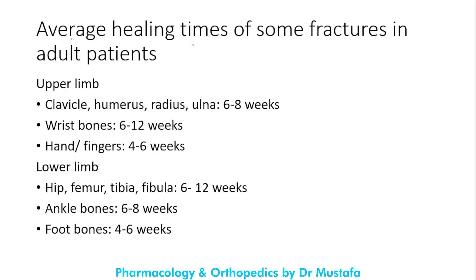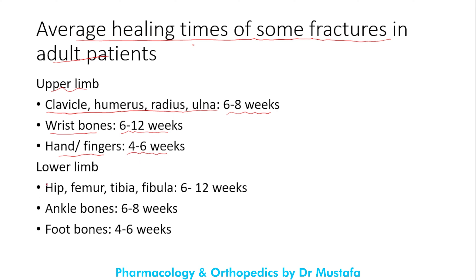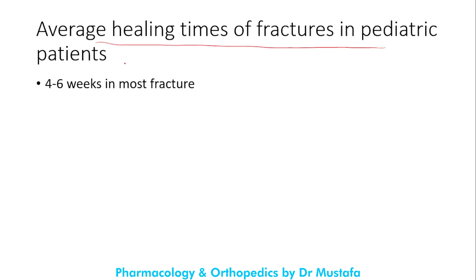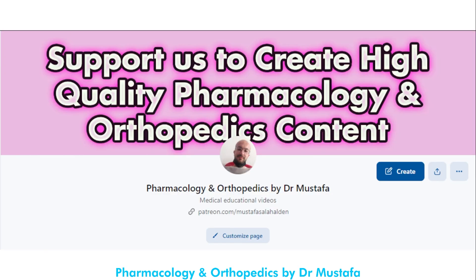Average healing times in adult patients: for the upper limb, the clavicle, humerus, radius, and ulna unite in 6 to 8 weeks; wrist bones in 6 to 12 weeks; hand and fingers in 4 to 6 weeks. For the lower limb, the hip, femur, tibia, and fibula unite in 6 to 12 weeks; ankle bones in 6 to 8 weeks; foot bones in 4 to 6 weeks. In pediatric patients, the average healing time for most fractures is 4 to 6 weeks.